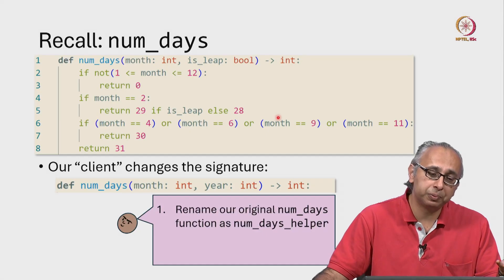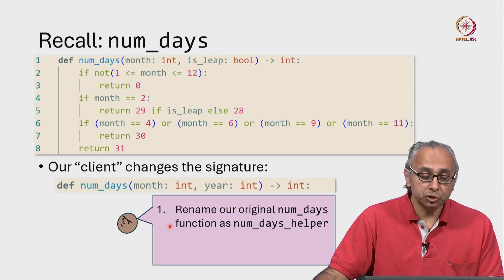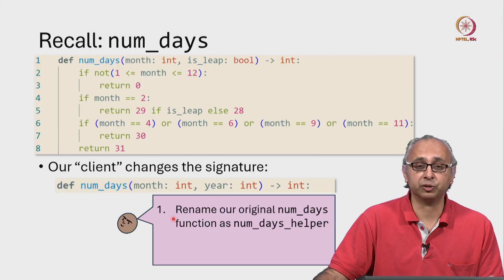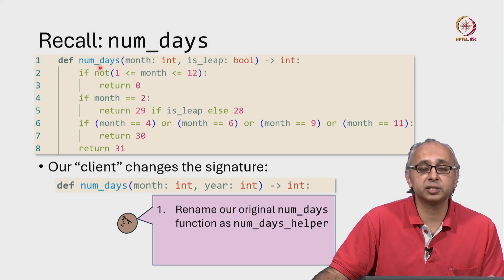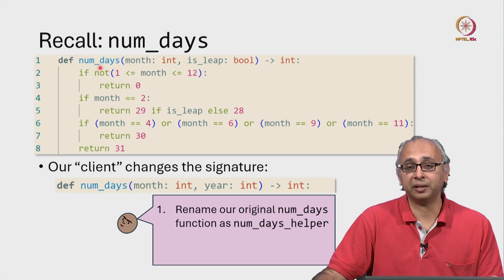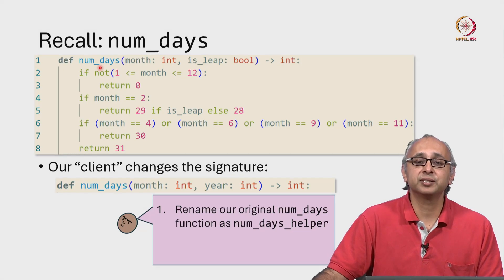So their first suggestion is to rename the function. Remember, the client wants the function to be called num_days. So we need to call this helper function something else. And our friend suggests, let's call that num_days_helper.